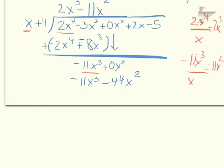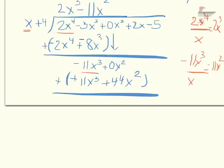Then I subtract — I change that to plus and negate everything inside: negative 11 plus 11 cancels out, and 0 plus 44 is 44x squared. Then I carry down the next term, which is plus 2x, and I'm ready to divide again.